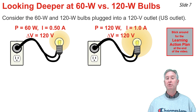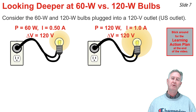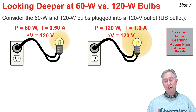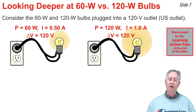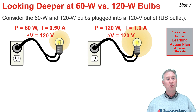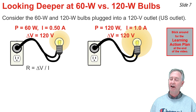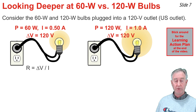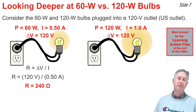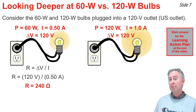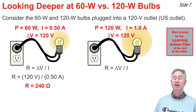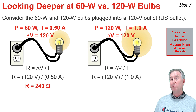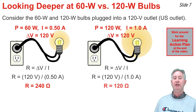I want to do two things: first, calculate the resistance for each bulb. Using delta V equals IR, for the 60-watt bulb, R equals delta V over I — that's 120 volts divided by 0.5 amps — which comes out to be 240 ohms. Repeating for the 120-watt bulb, R equals 120 divided by 1 amp, which comes out to be 120 ohms.